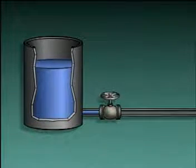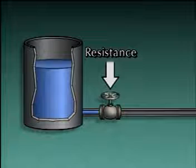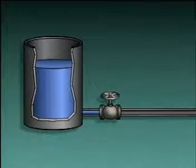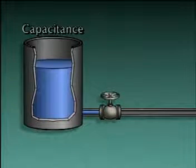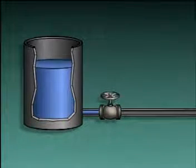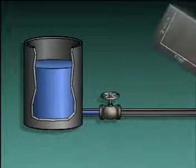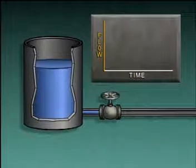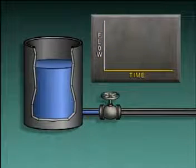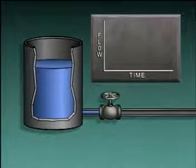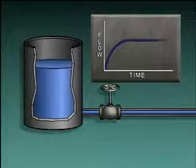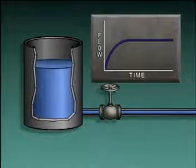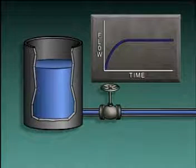For example, in this simplified liquid system, a valve offers resistance to the flow of liquid from a container. The size of the container determines the system's capacitance. With the valve closed, there's no flow through the system. When the valve is opened, we'll plot the effects on a graph. The vertical axis represents flow and the horizontal axis represents time. When the valve is opened, the flow of liquid from the container increases rapidly at first, then levels off at its maximum value.